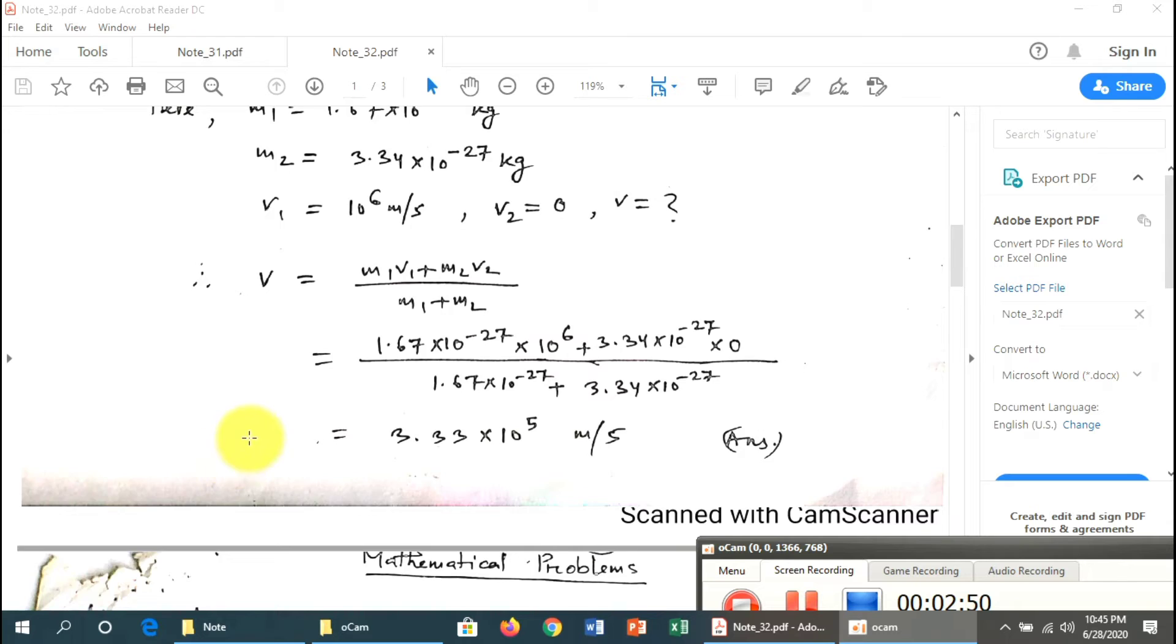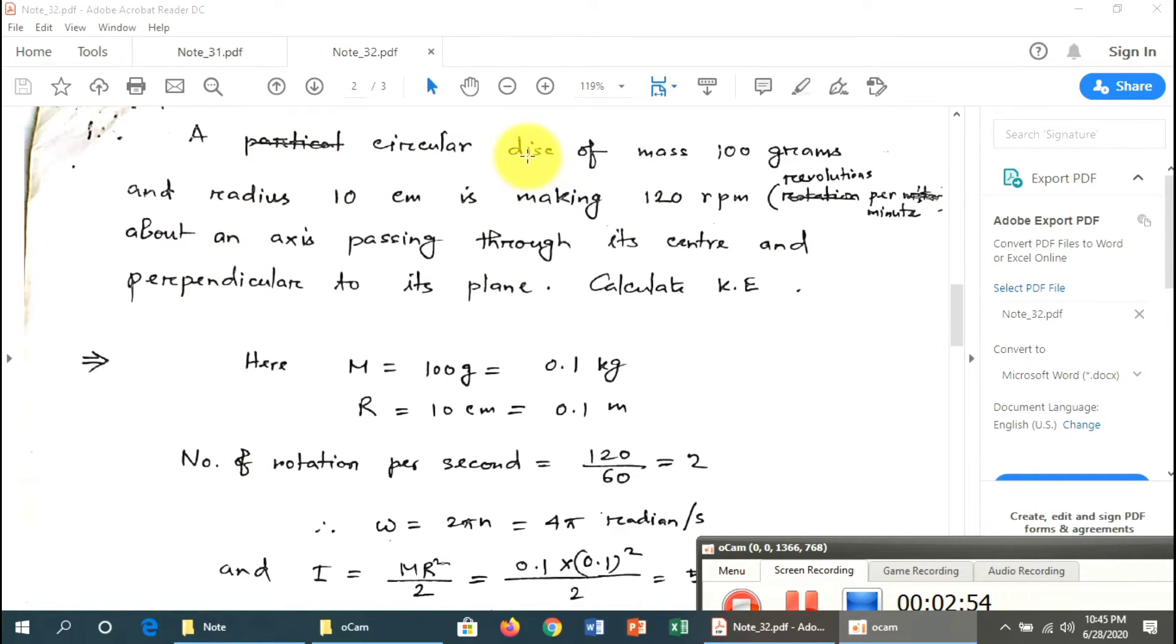Problem 2: A circular disk of mass 100 grams and radius 10 centimeters is making 120 rpm (revolutions per minute) about an axis passing through its center and perpendicular to its plane. Calculate the kinetic energy of the circular disk.